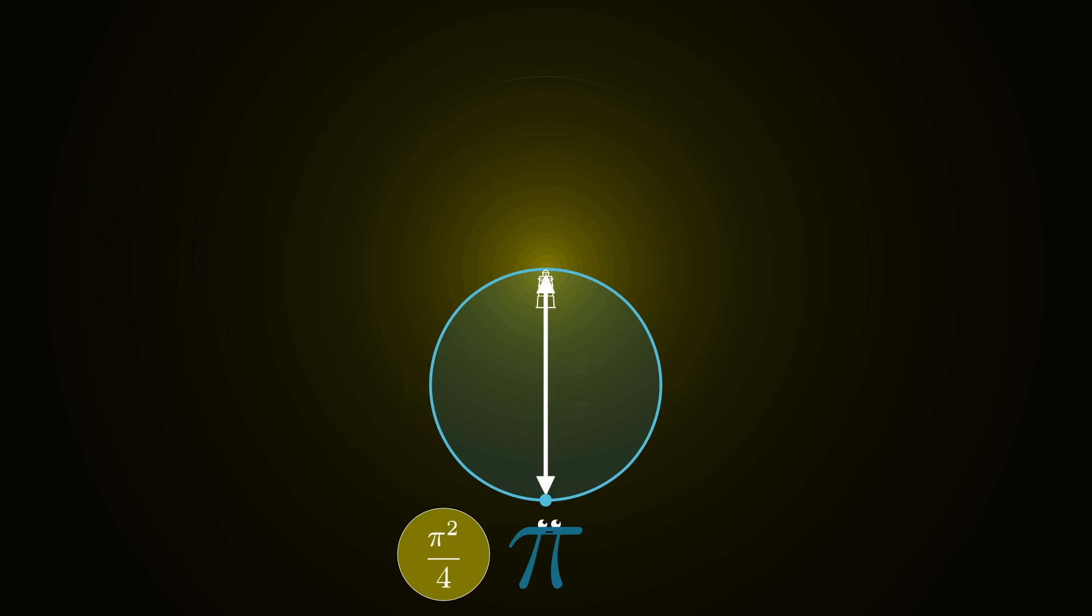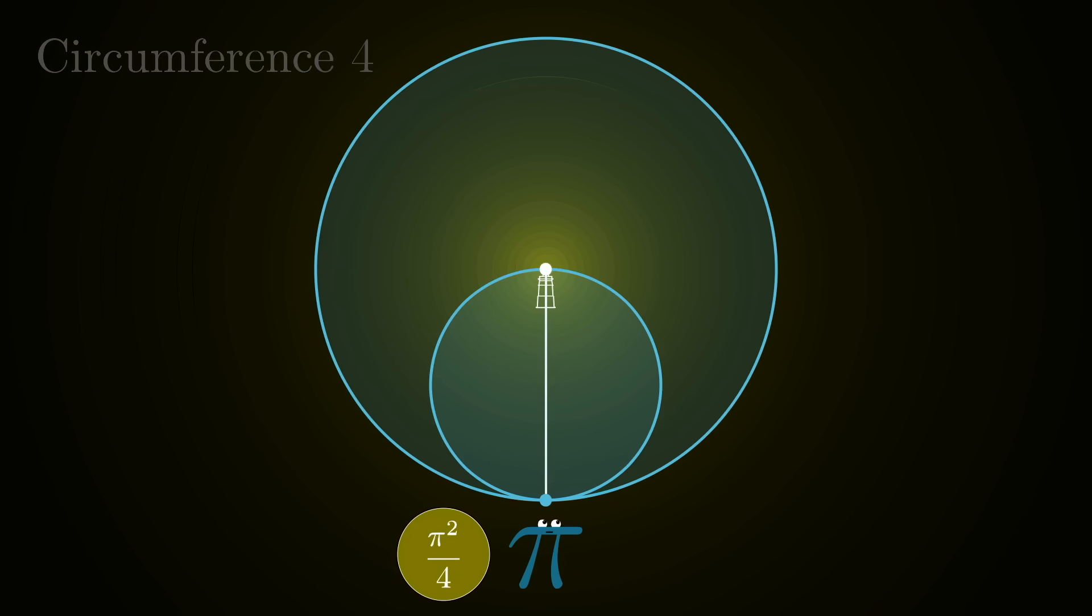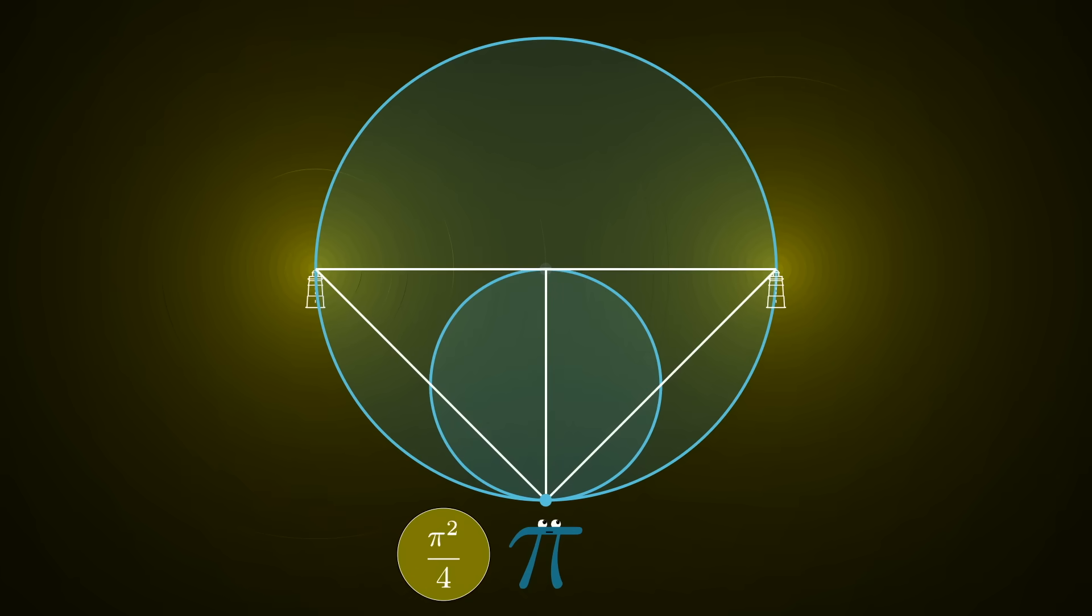Now for our first transformation, draw a new circle twice as big so circumference 4, and draw a tangent line to the top of the small circle. Then replace the original lighthouse with two new ones where this tangent line intersects the larger circle.